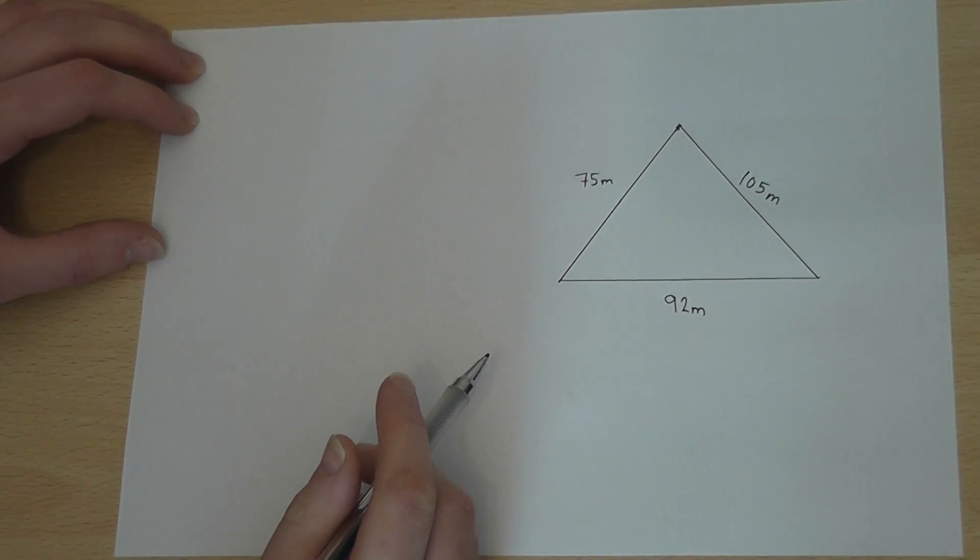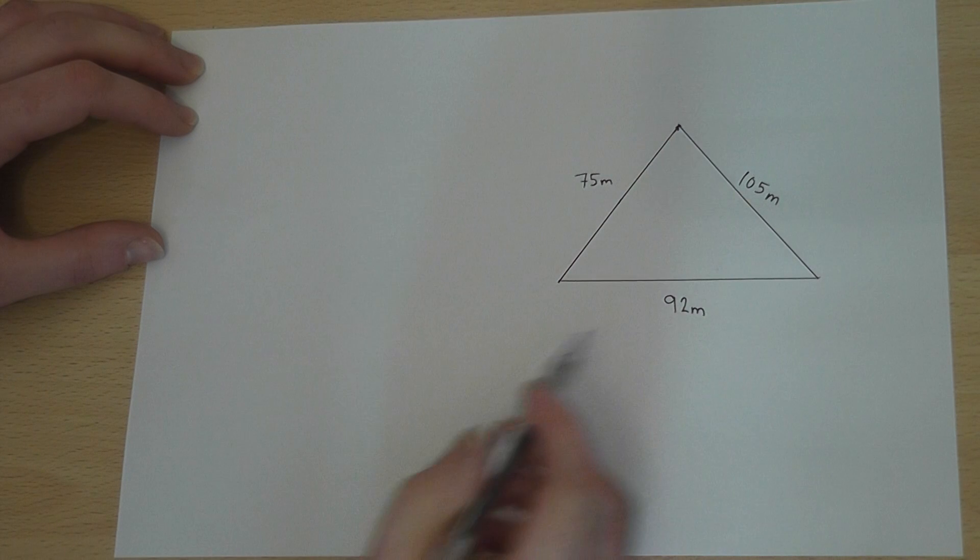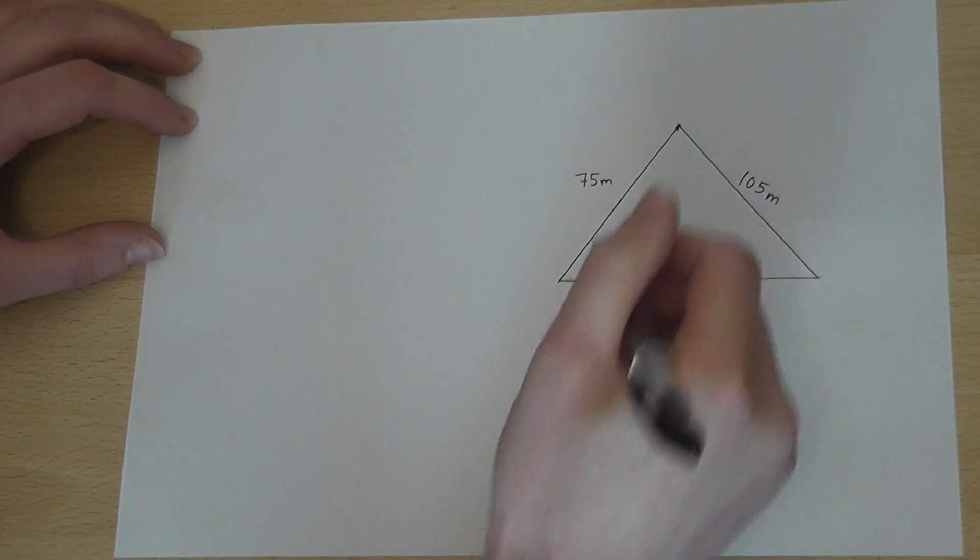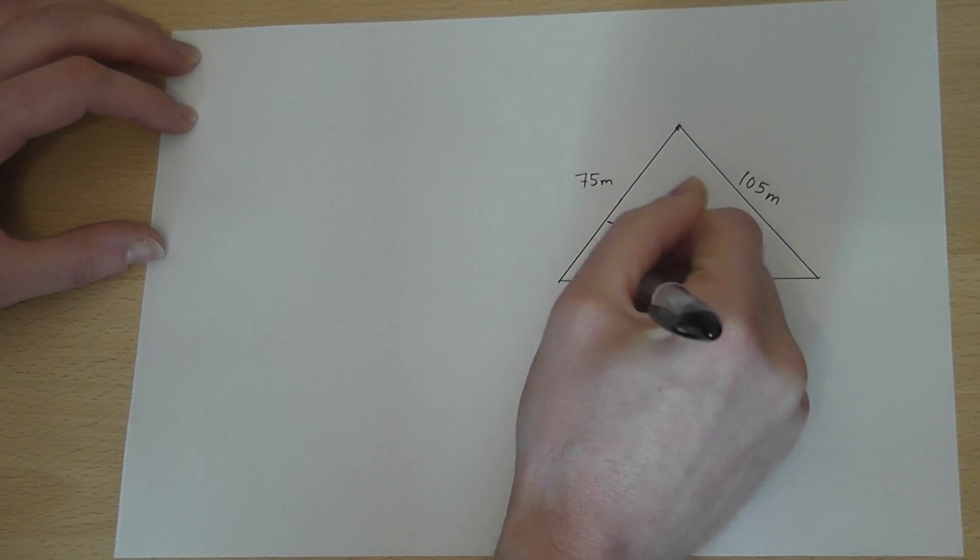This video looks at how to find the area of a triangle given three sides. Now, if we know two sides and an angle, let's call the angle X,